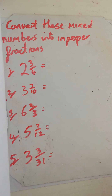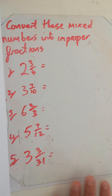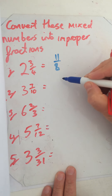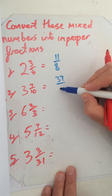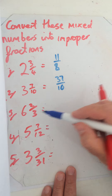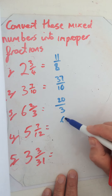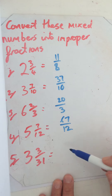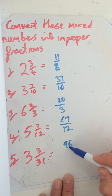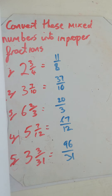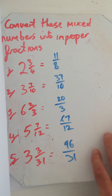Have a go at those — pause the video while you're doing it. The answers: eleven eighths; twenty over three; five twelfths — wait, sixty-seven over twelve; and ninety-six over thirty-one. Make sure you copy out the questions as well. Just give those a quick tick.